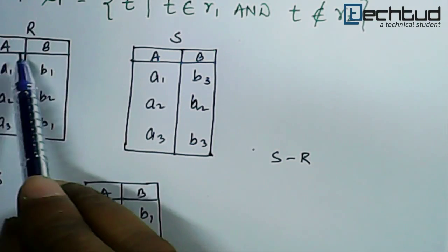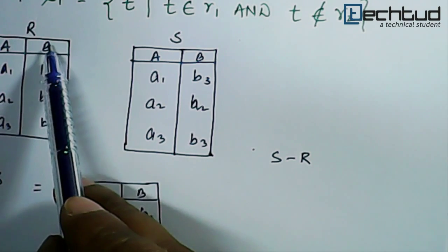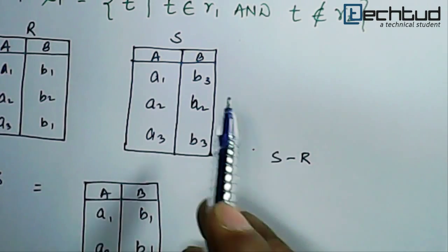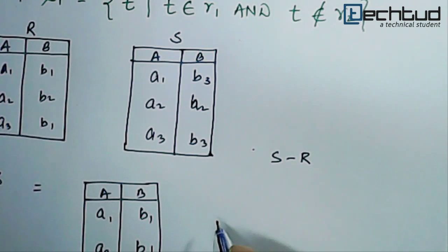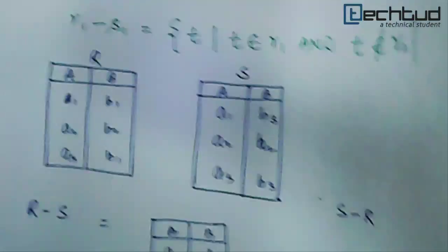If in this case we have A and B attributes and if we have to find out B that is B which is not present in S, then in that case we will write R minus S, or before we do R minus S we will first apply project operation on this.